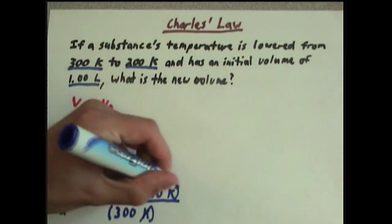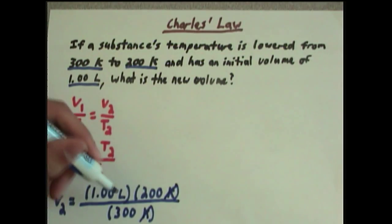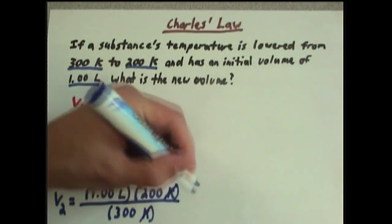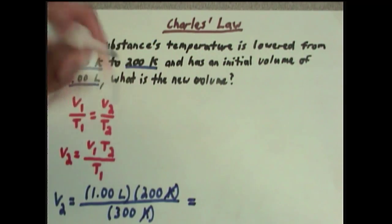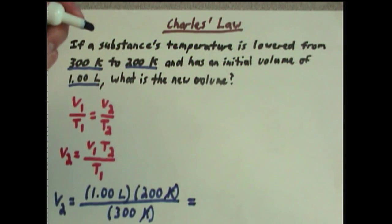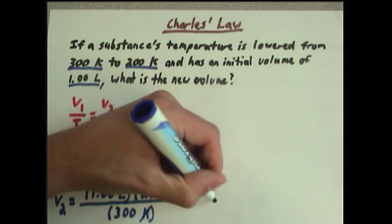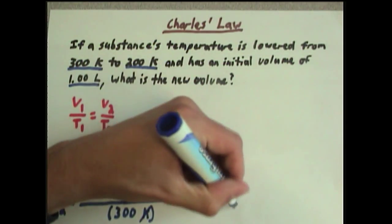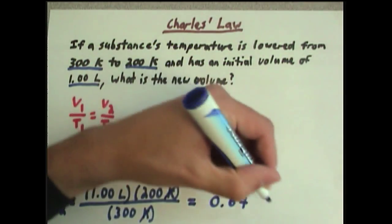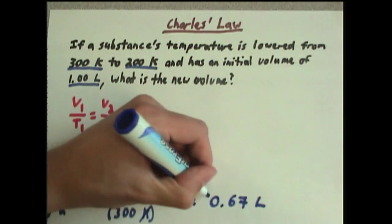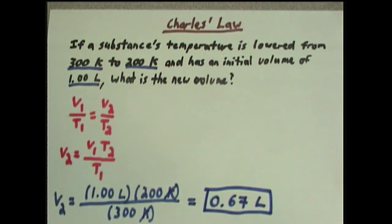And we see that our temperature kelvins cancel out to leave us with liters, which is volume. And calculating this gives us 0.67 liters. It's nice to have a human calculator sometimes. And that's our answer.